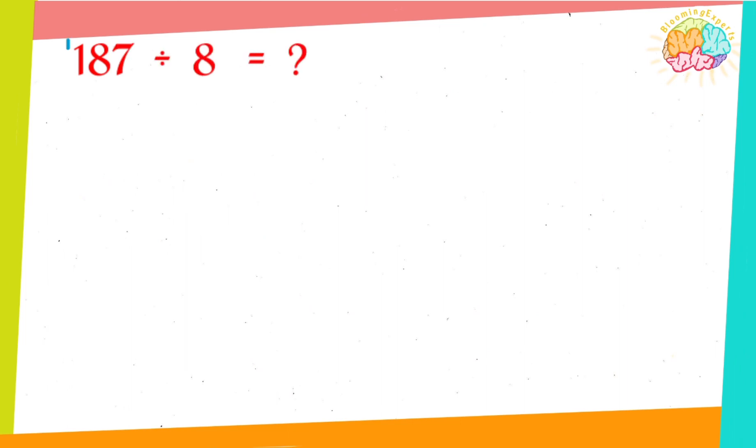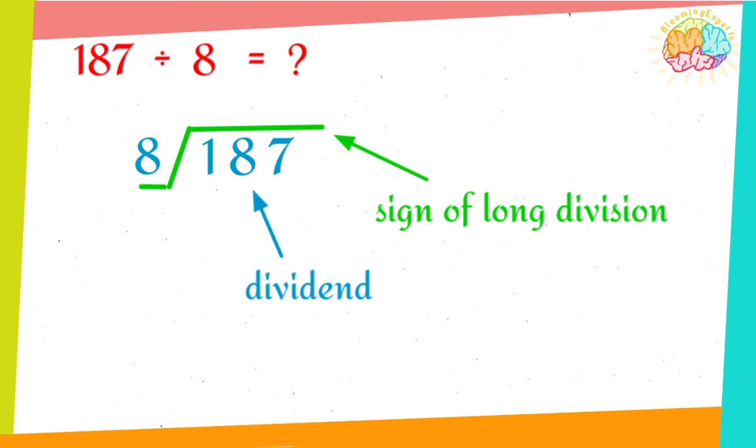187 divided by 8. 187 is the dividend and it is a three-digit number divided by 8, which is the divisor, a one-digit number. Now the application of long division: here's the dividend and the divisor. We read the sign of long division between the dividend and divisor in this way. Here's the dividend and this side is the divisor.